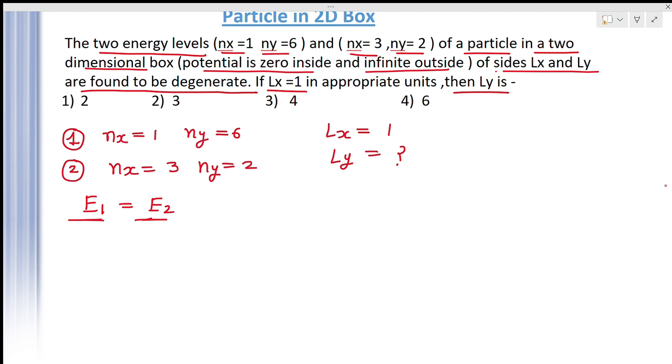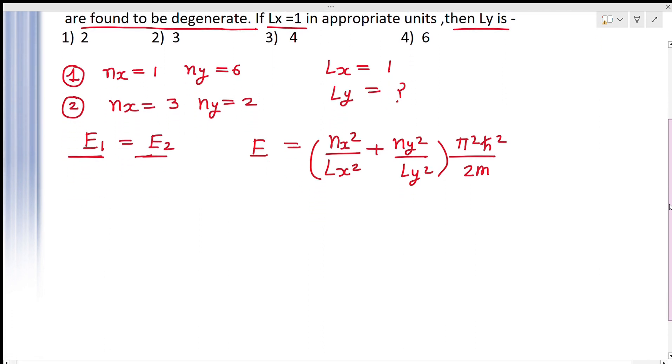So see here. We know what is the formula. Formula is E is equal to NX square upon LX square plus NY square upon LY square, pi square h cross square upon 2m. Now you have to distribute here the values.